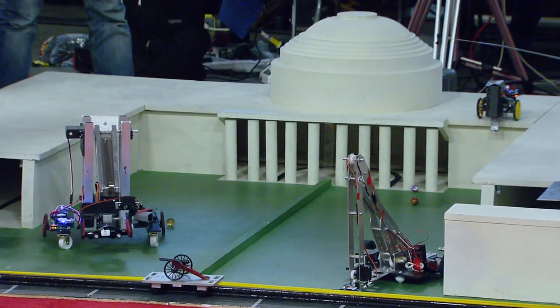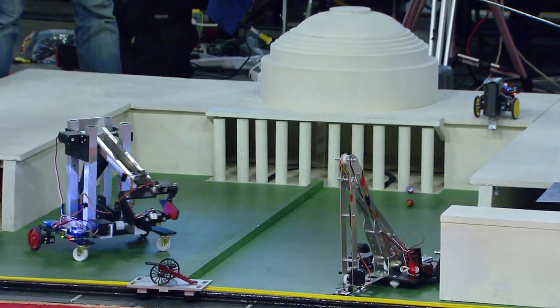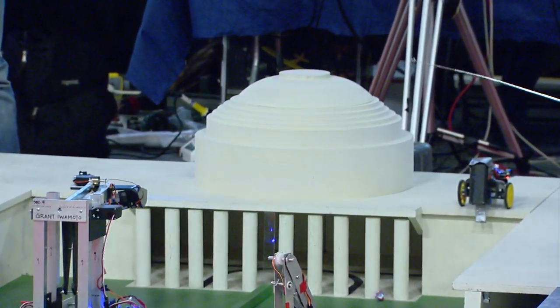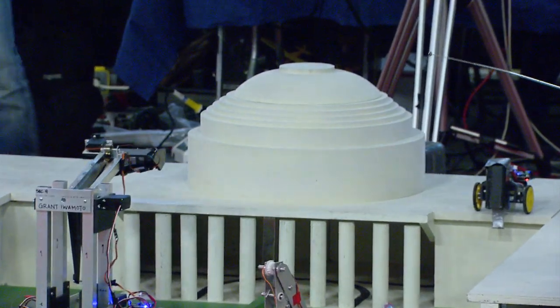The robot we saw earlier is a good example of a rigid body. You can see in this video that as our robot moves, its pieces do not bend or distort noticeably.